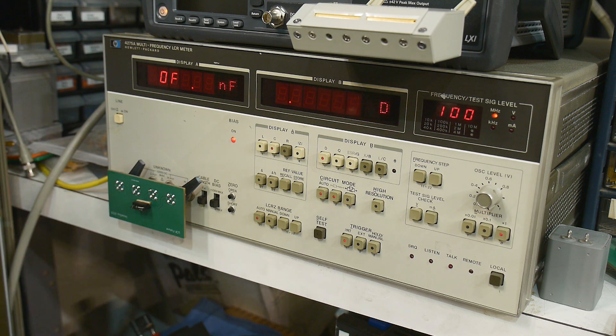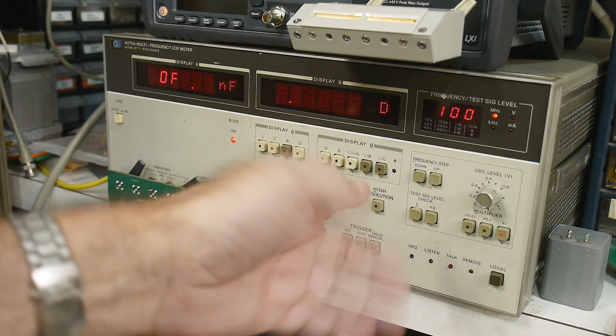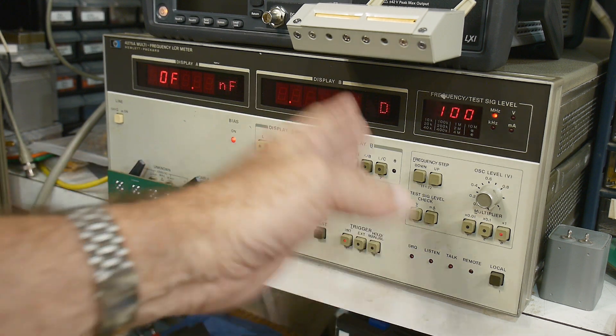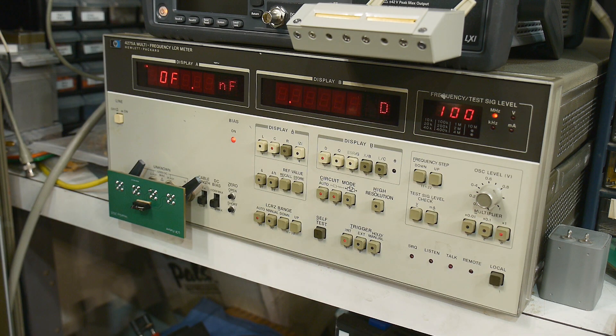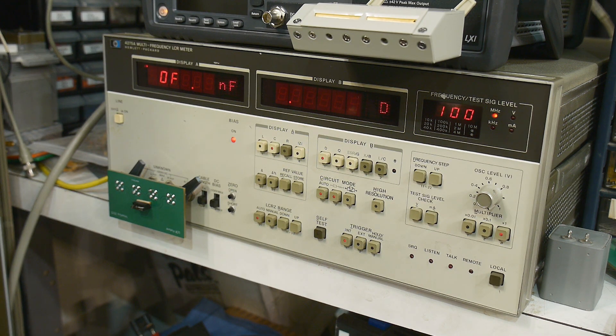I thought it was external only, but it actually has a card inside the machine that has internal bias control. But you can't do it from the front panel, there's no settings from the front panel.